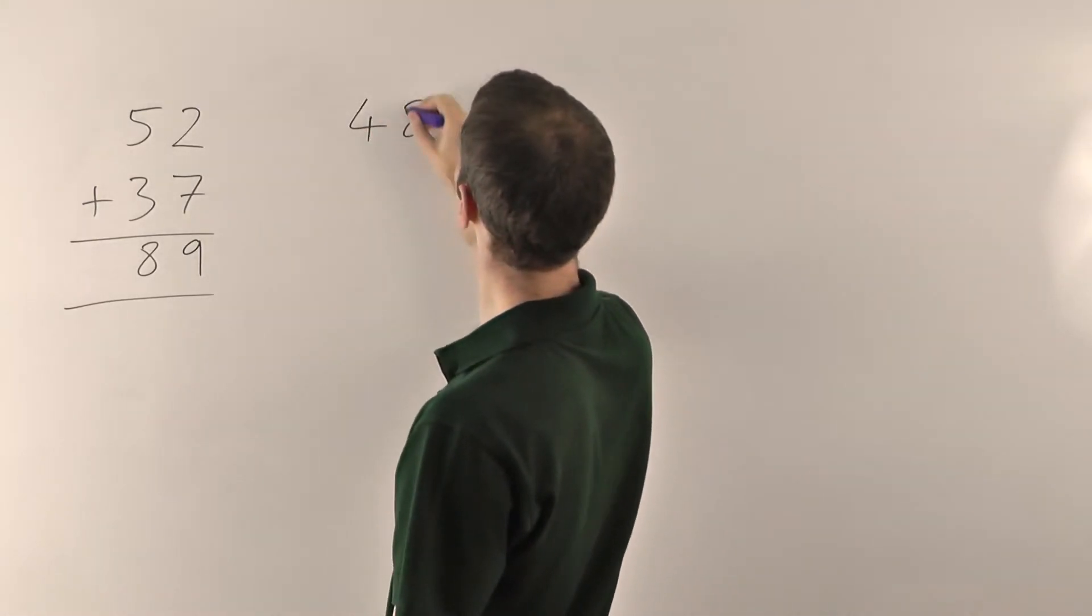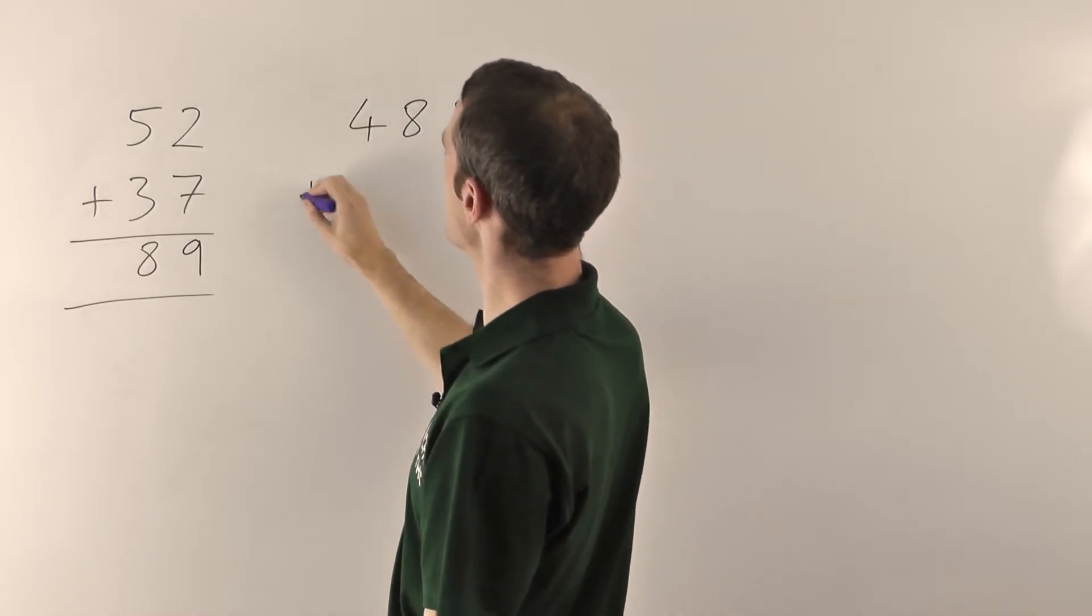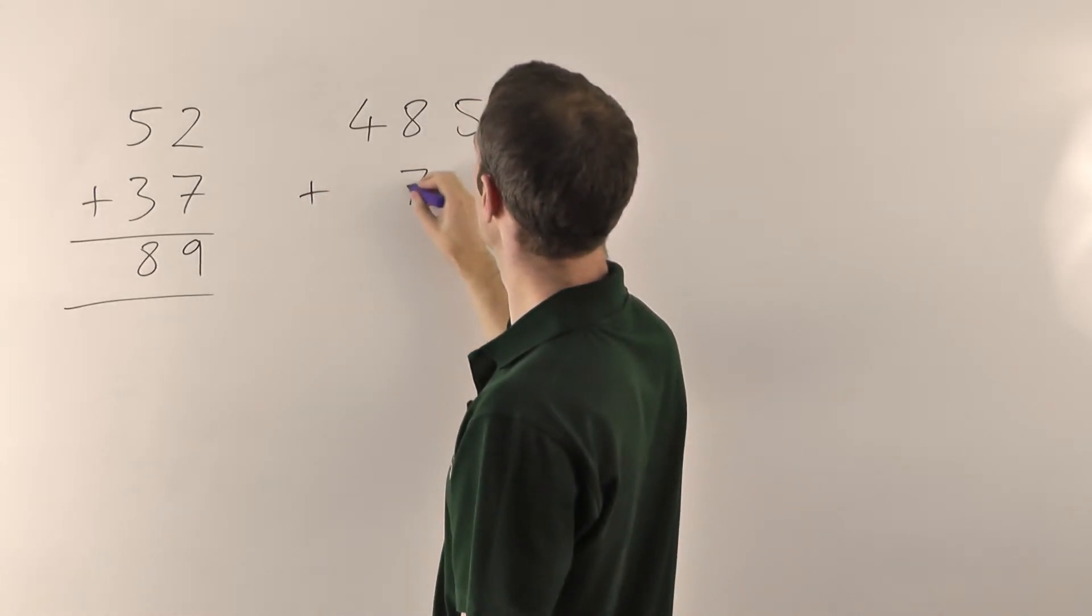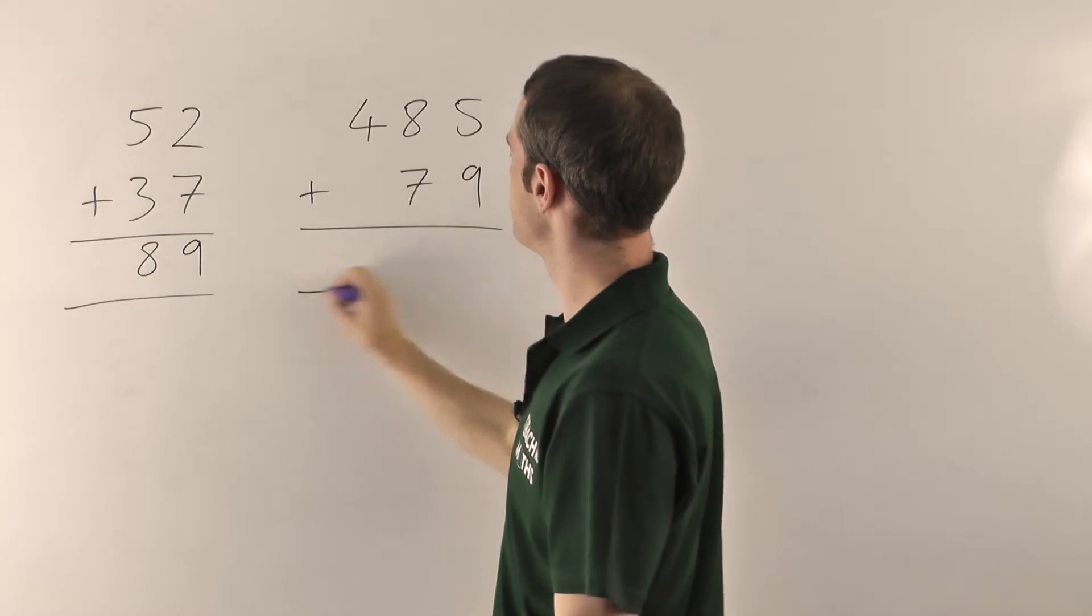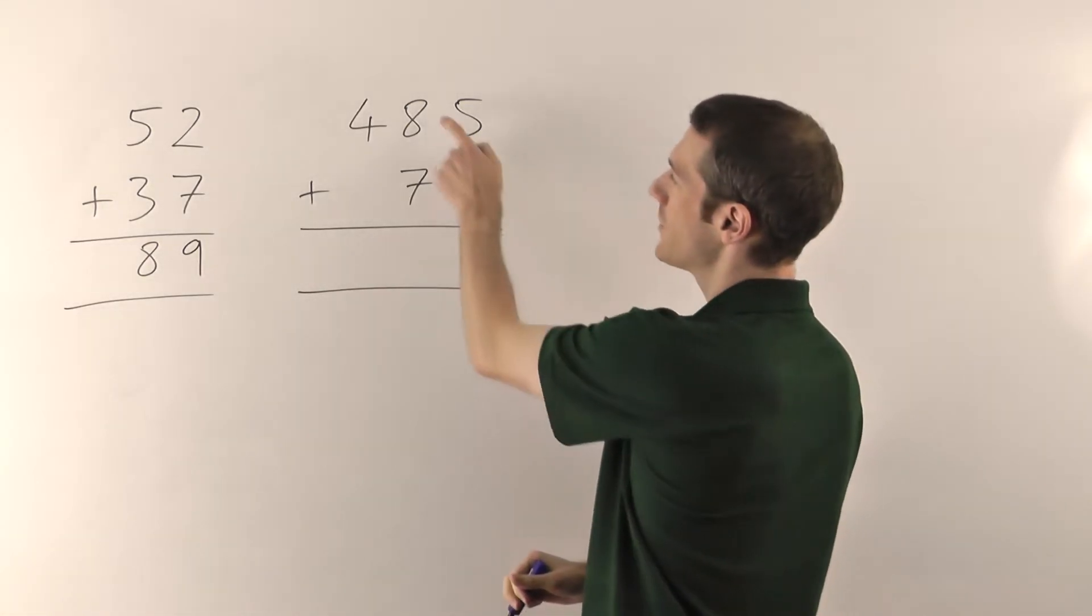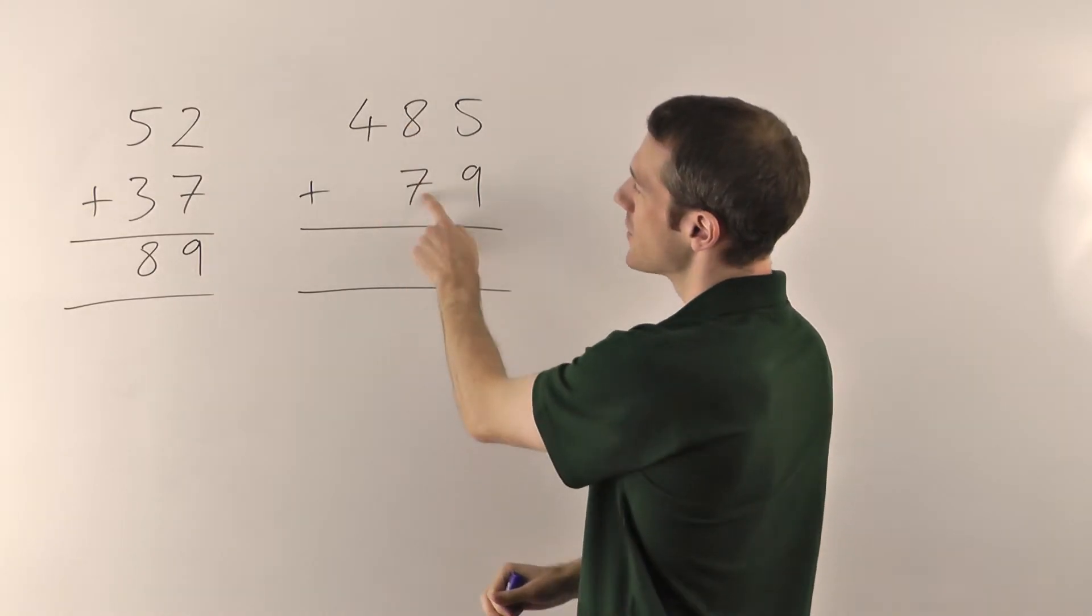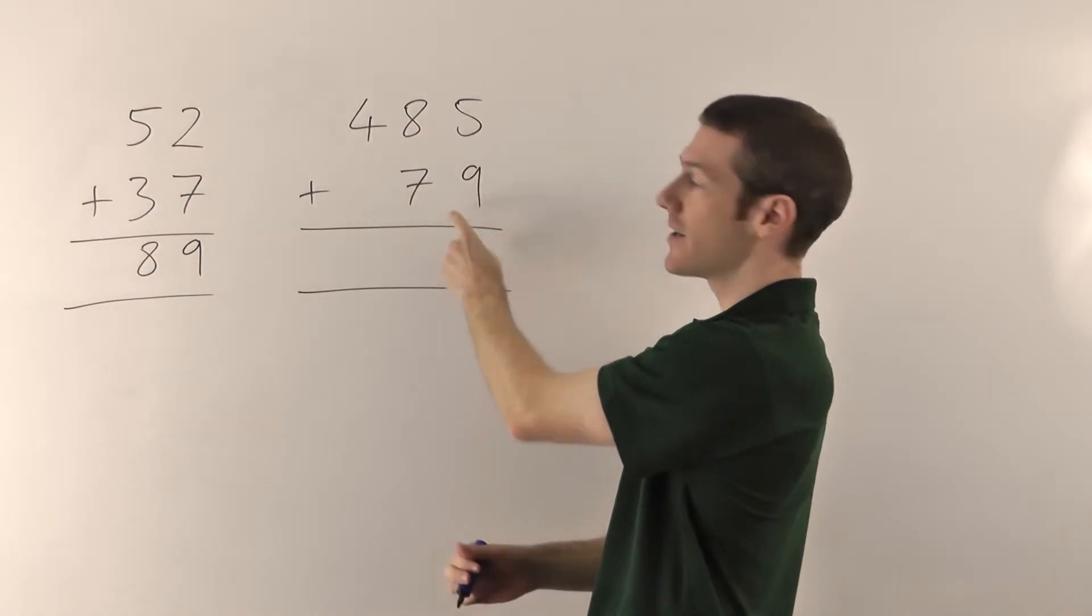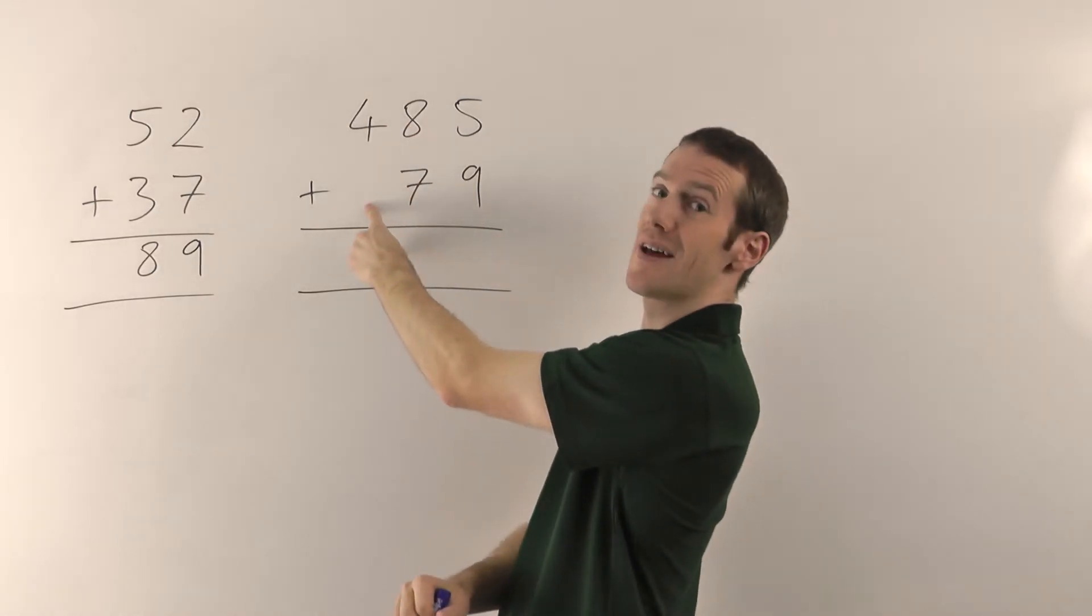We'll do 485 plus 79. Now again you've got to be careful of your columns here. So units column, tens column, hundreds column. There are no hundreds here in 79. So don't be writing your 7 there or anything like that.